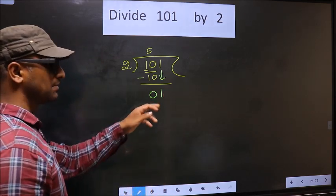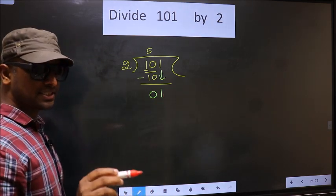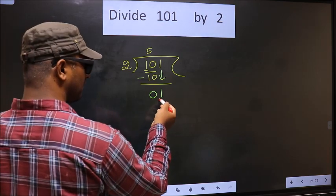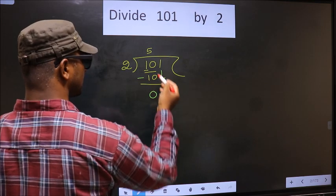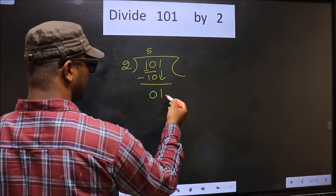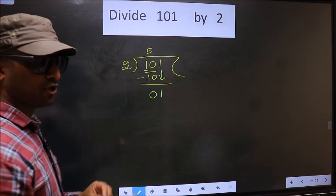This is where the mistake happens. And the mistake is this. Here we have 1 smaller than 2. So what many do is they put a dot and take 0 here. Which is wrong.